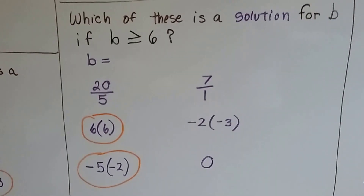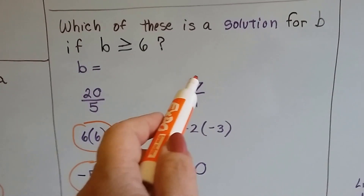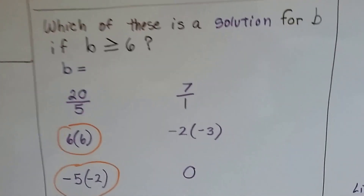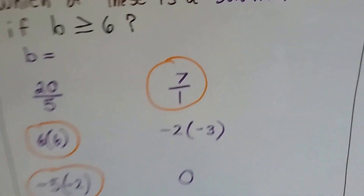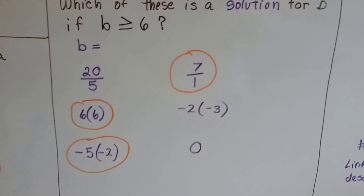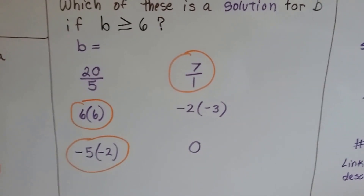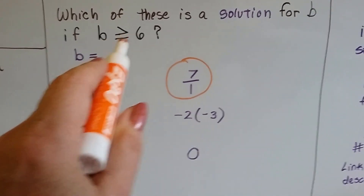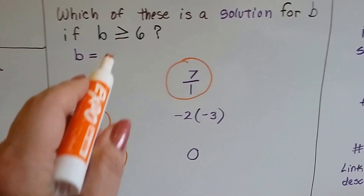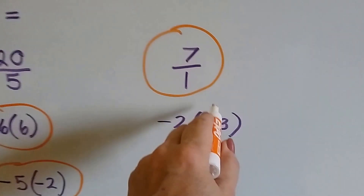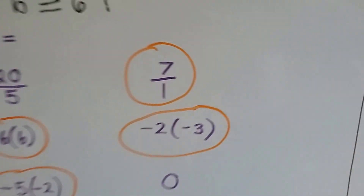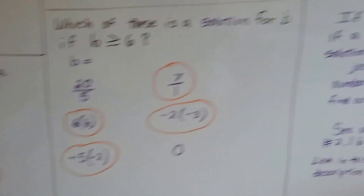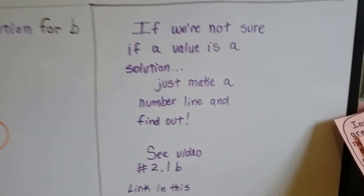How about 7 over 1? When we put a number over 1, it's just that number — it's a 7. So yes, 7 is greater than 6; that's a solution. How about negative 2 times negative 3? Two negatives make a positive when you multiply them, so negative 2 times negative 3 makes positive 6. Because the bar is underneath the inequality sign — greater than or equal to — and 6 is equal to 6, that's a solution. How about 0? Is 0 greater than or equal to 6? No, it's not. So if we're not sure if a value is a solution, just make a number line and find out.